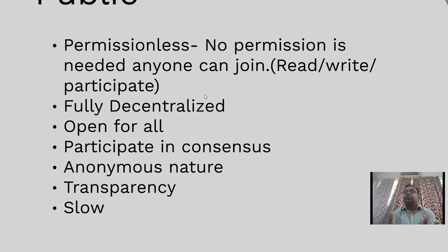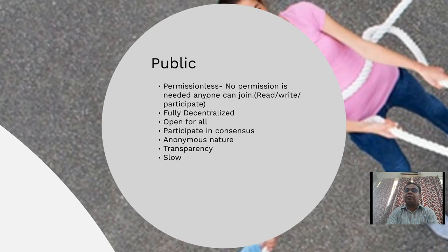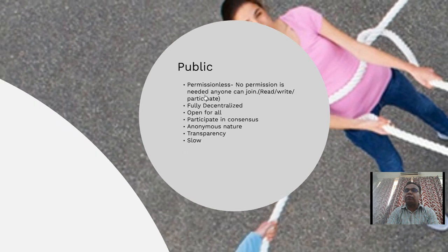The beauty of this blockchain platform is that the users are anonymous. We use this type of platform when we do not know who the users will be. Users are anonymous, which raises security issues. Therefore, this platform is transparent — whatever is happening is visible to all users. The specific differences between public, private, and consortium will be covered further in the video.